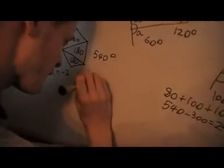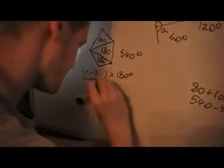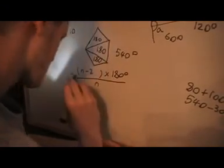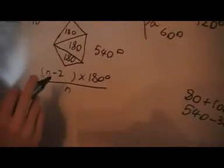But to find out what each angle is equal to, we've got this rule here that says n minus 2 times 180 degrees divided by n. And this is for a regular polygon. It tells you what each angle is equal to.